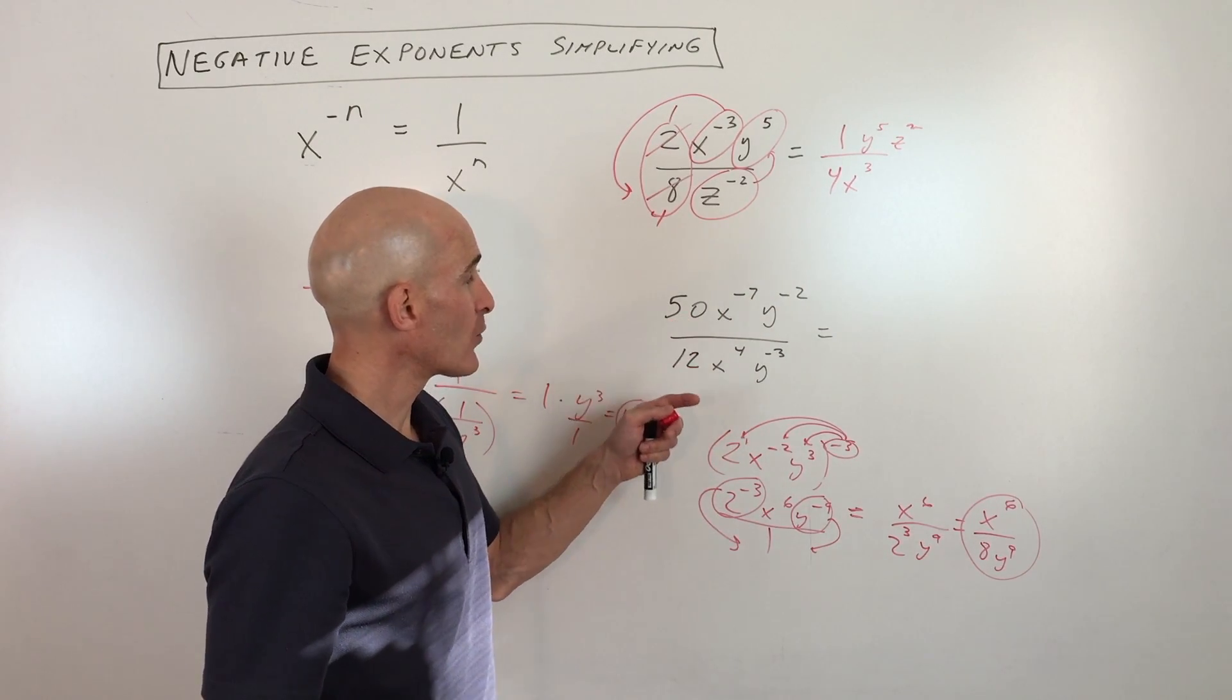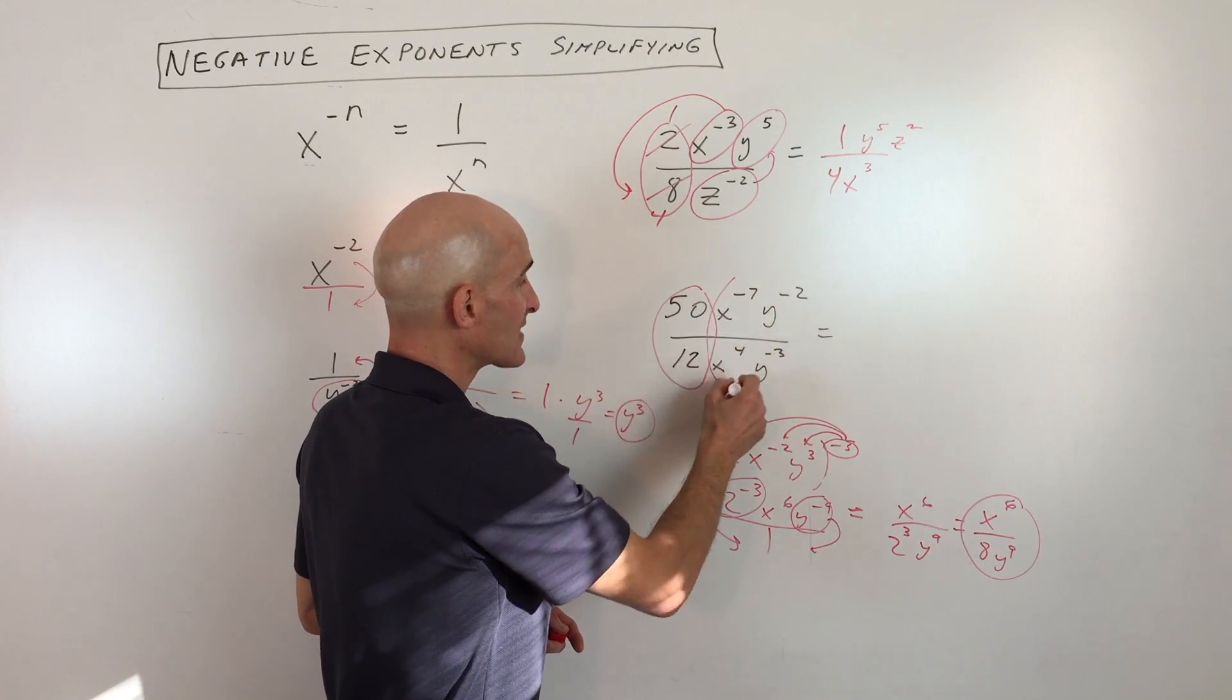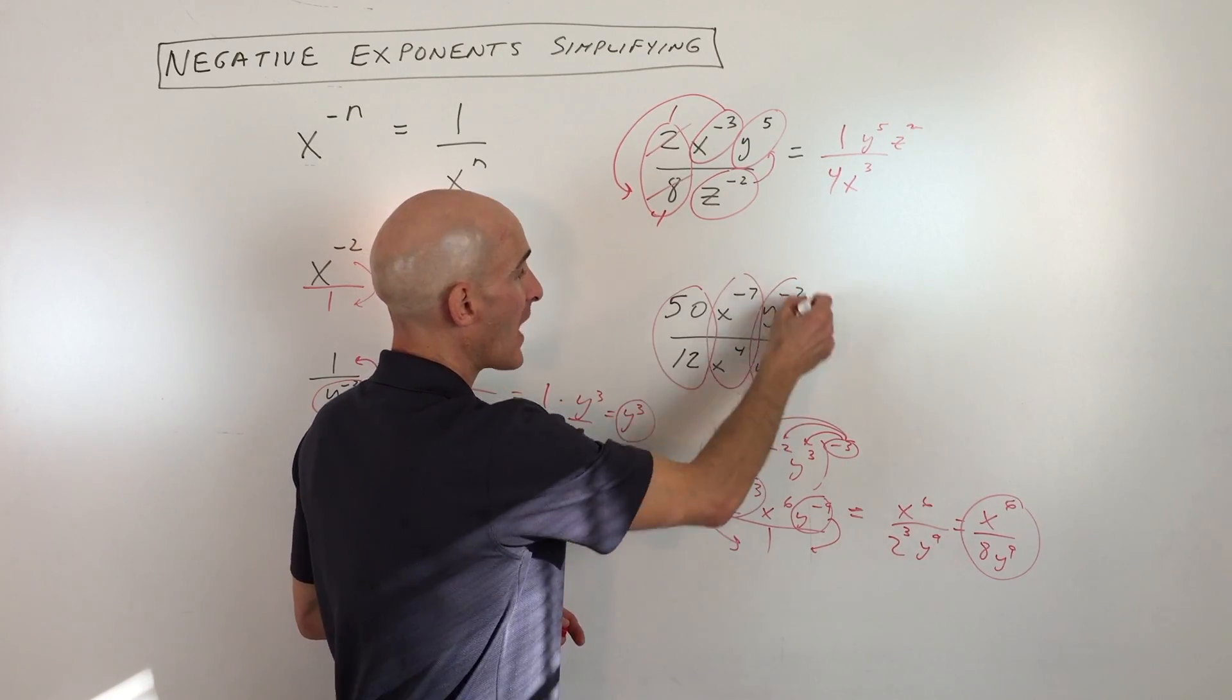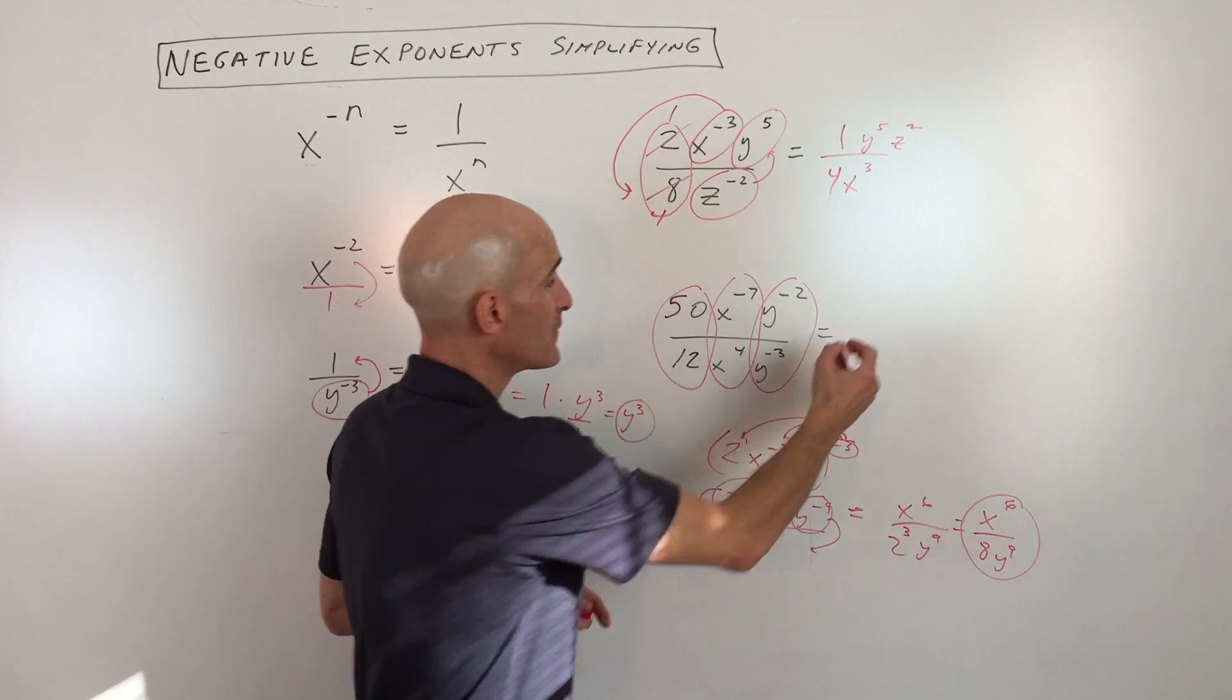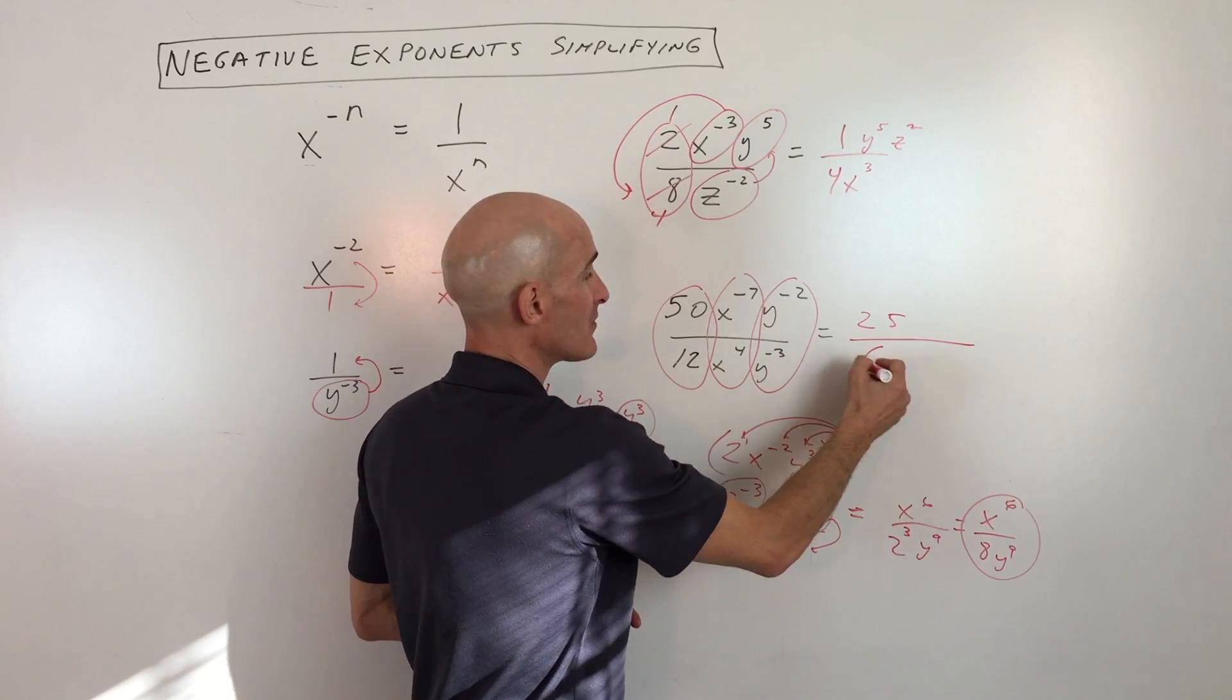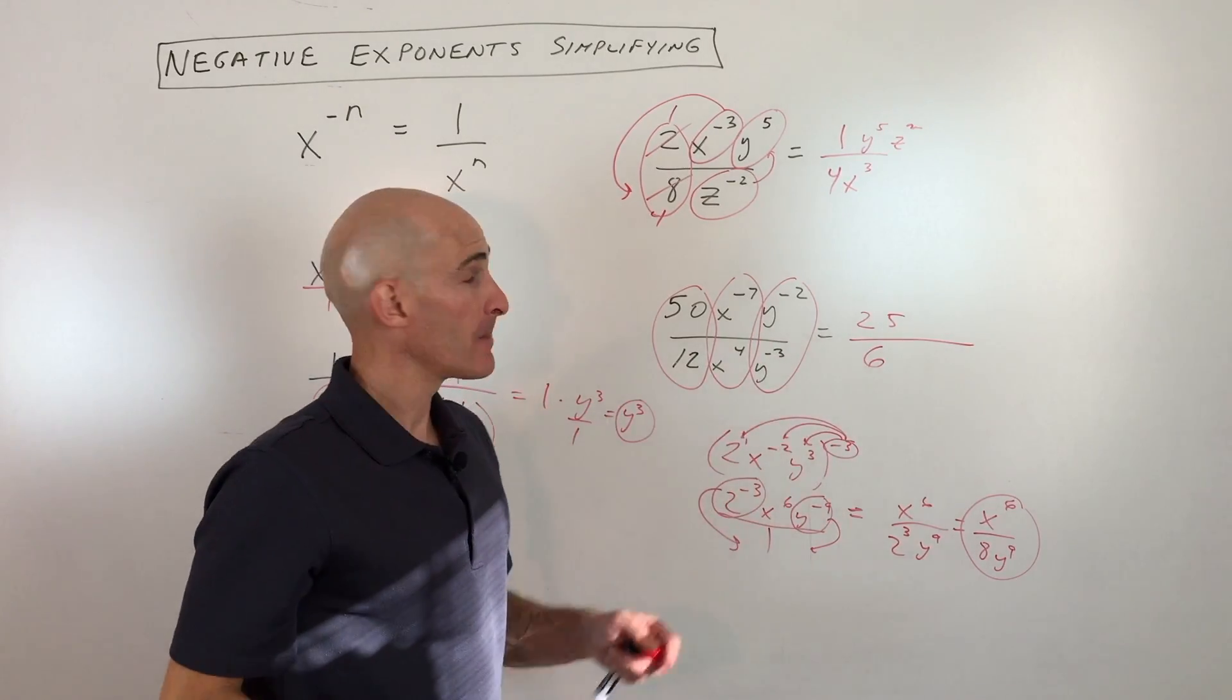Same thing. We're going to work with the numbers, we're going to work with the x's together as a group, and we look at the y's together as a group. So here we're just going to reduce these. We can see that 2 goes into 50 25 times, 2 also goes into 12 six times. We've reduced it.